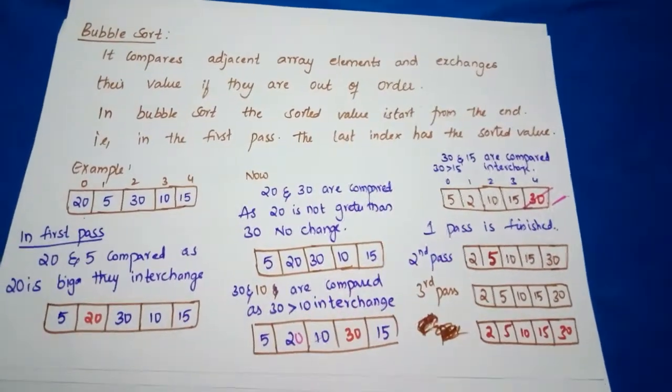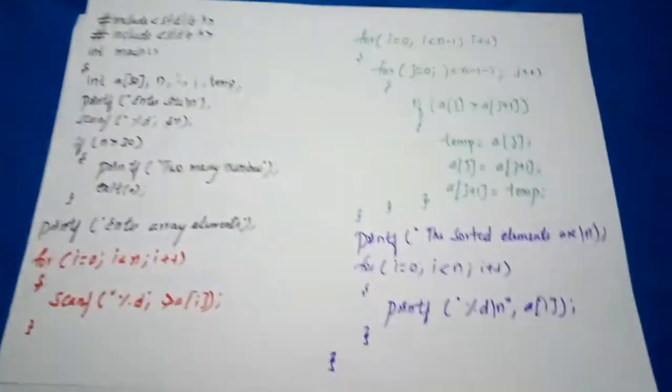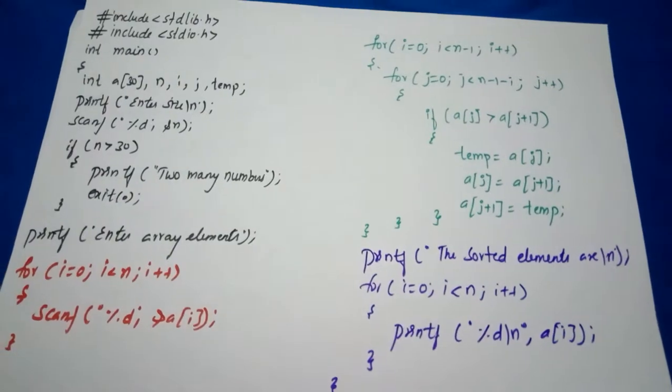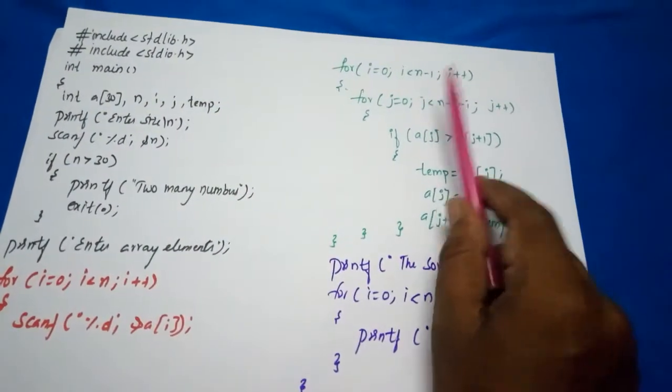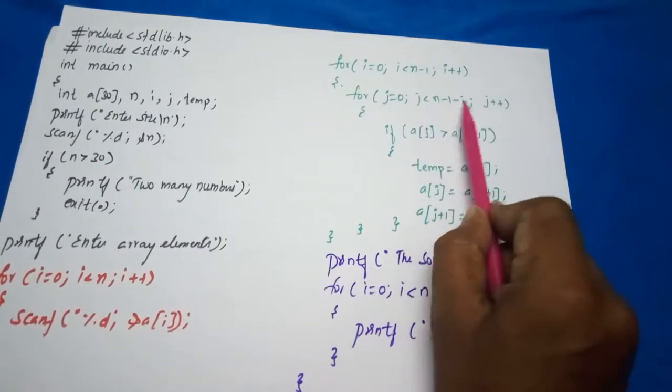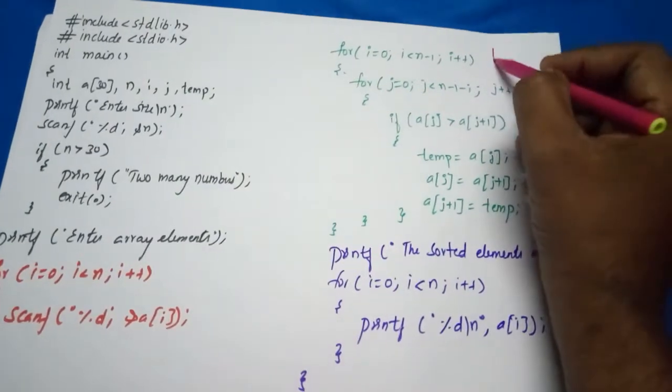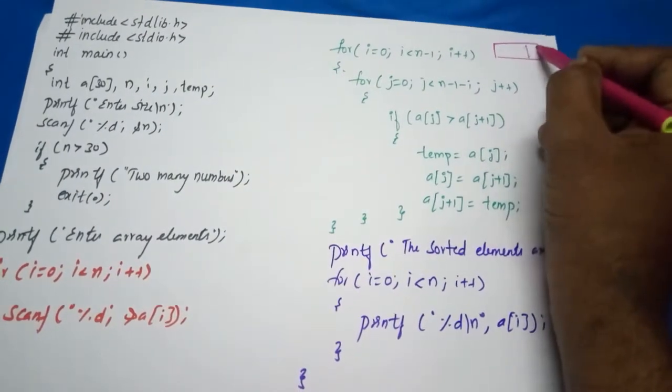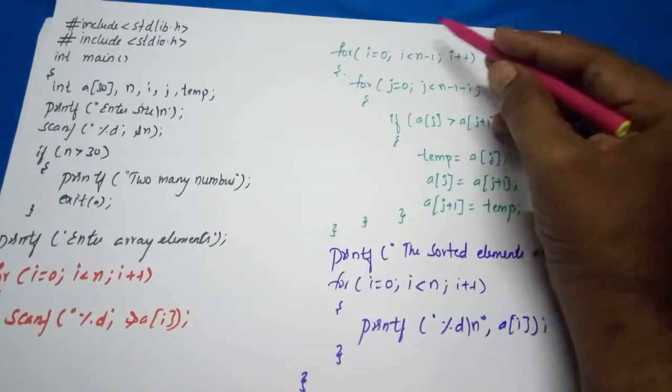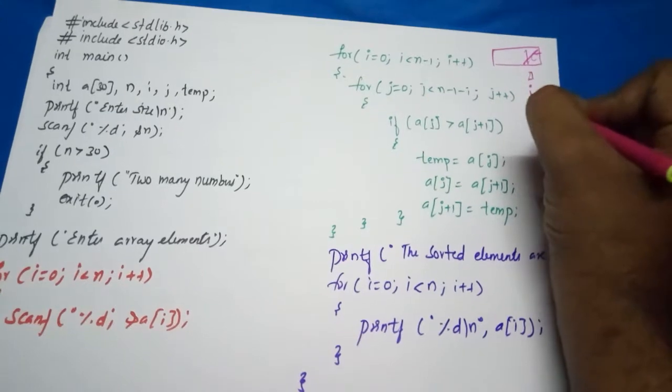So what is the technique actually? Whenever we do the bubble sort, what is happening is we are only checking for n minus 1. Here till n minus 1 we are doing, and j is less than n minus 1 minus i. Why we are writing n minus 1 minus i? Here, the last element in bubble sort is sorted, so we don't want this. So who is going to tell about this last element? i.